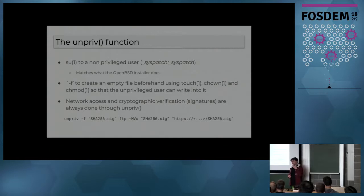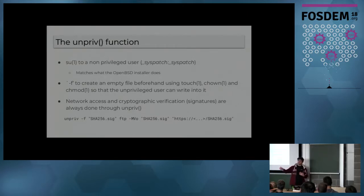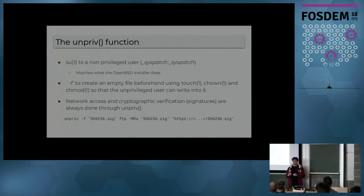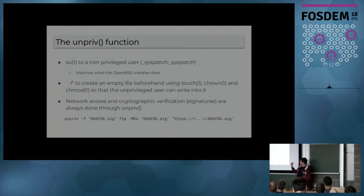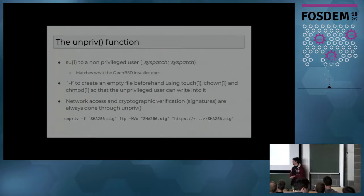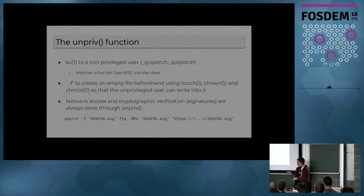You may want to pass an argument to this function — for example, as an unprivileged user go online, but you also want the right to download something and write it somewhere. With the minus F option, the dropping of privilege will happen after the file has been created. Everything that's network-related or crypto-related will be done using this function, which is basically what we do in syspatch to fetch the SHA-256 signature file.